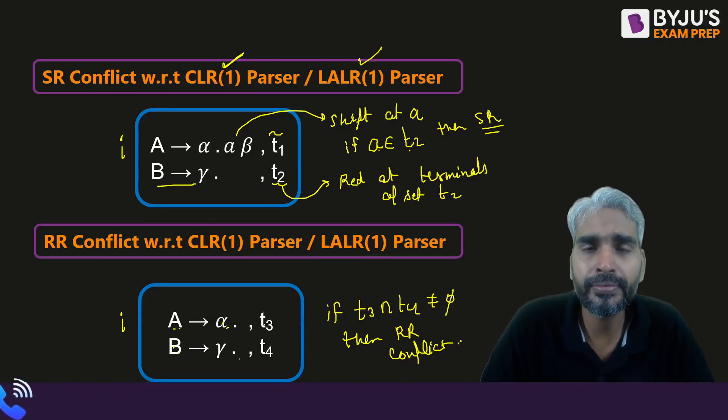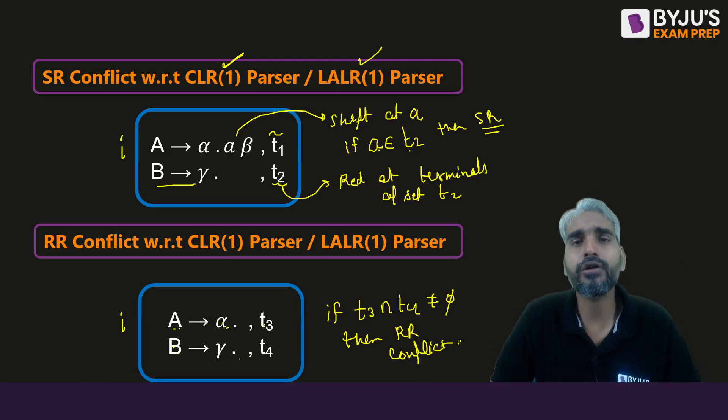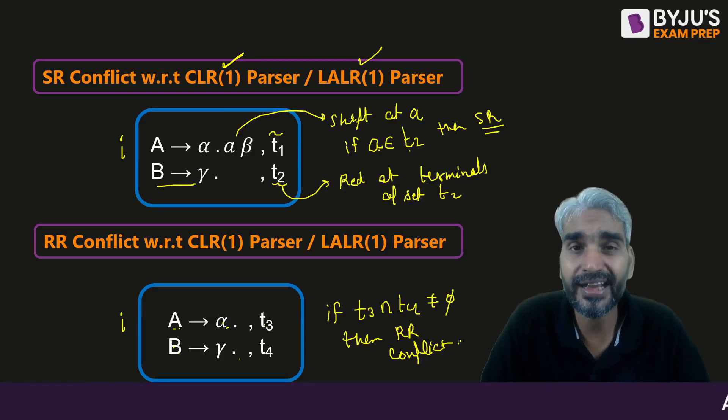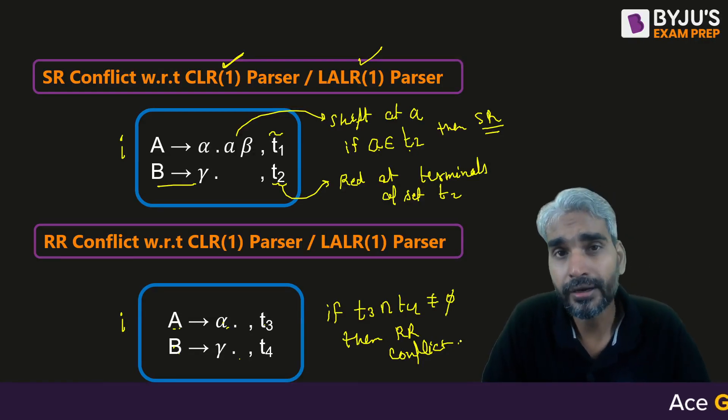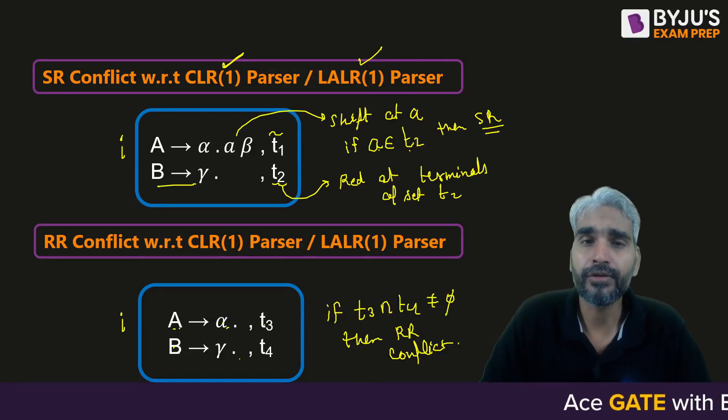So you just need to remember these simple steps. While constructing the DFA, you will be able to decide whether SR or RR conflict exists or not. That will be all — thank you very much.